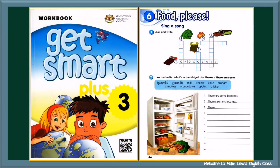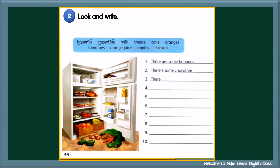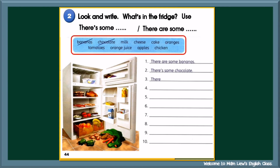Now, take out your workbook and turn to page 44. We are going to do activity 2. Activity 2: Look and write. What's in the fridge? Use there's some or there are some. Look at the words in the box here. Then, write a sentence for each word.